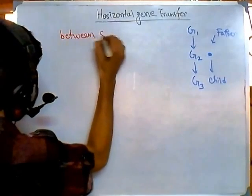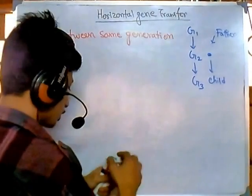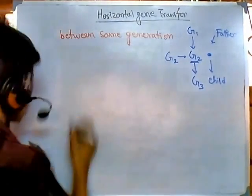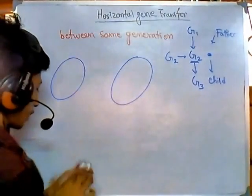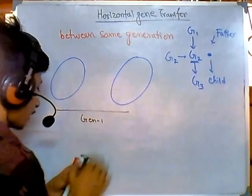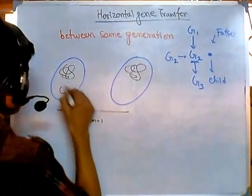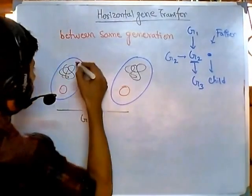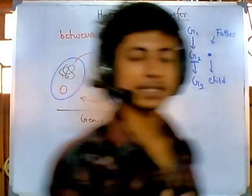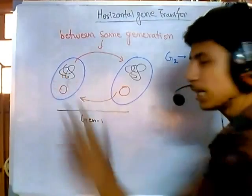Horizontal gene transfer means transfer of genes between the same generation — that's what makes it very unique. A gene is transferred from one individual of, say, generation two to another individual of that same generation. So if we have two bacteria present at the same generation, both having bacterial chromosomes and plasmids inside, they can transfer genetic material between themselves. This is called horizontal gene transfer.